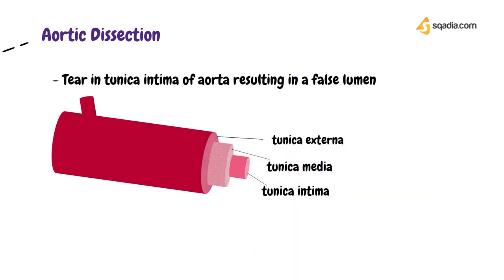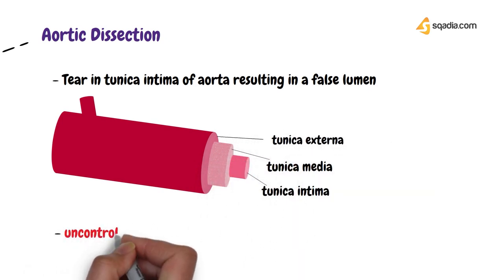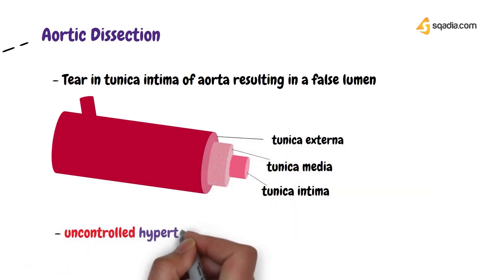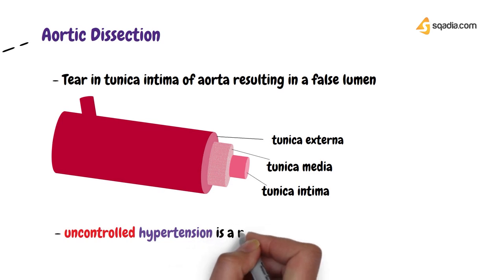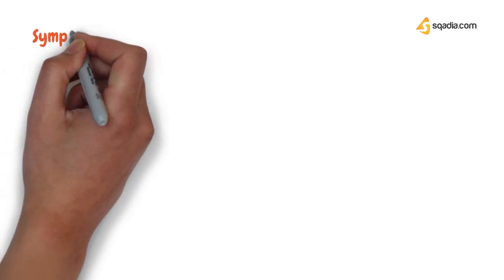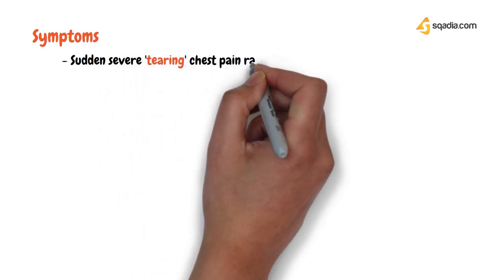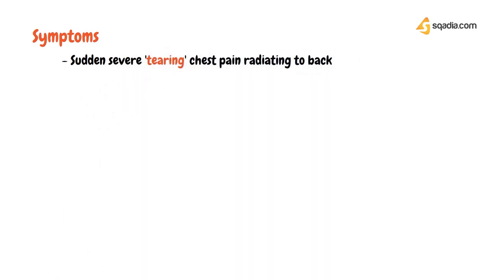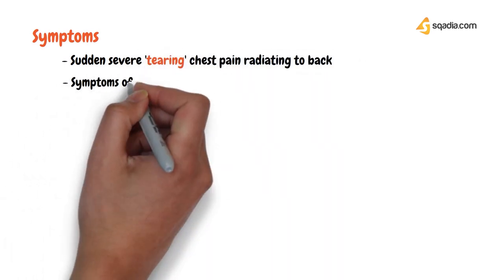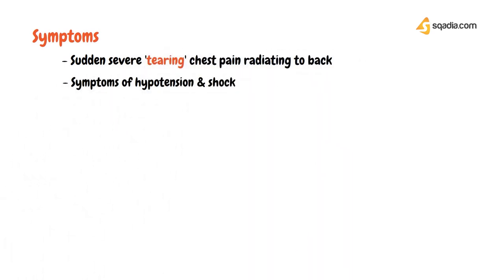This life-threatening condition can occur in patients with uncontrolled hypertension. Symptoms of aortic dissection include a sudden severe tearing chest pain radiating to the back, as well as symptoms of hypotension and shock.